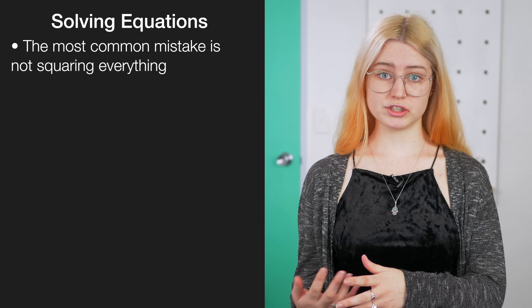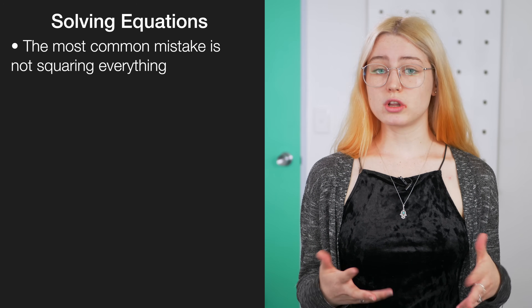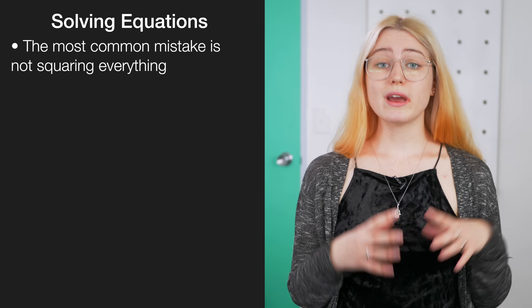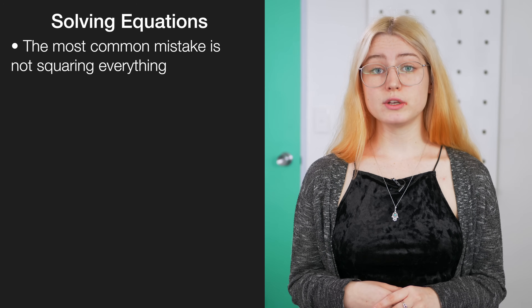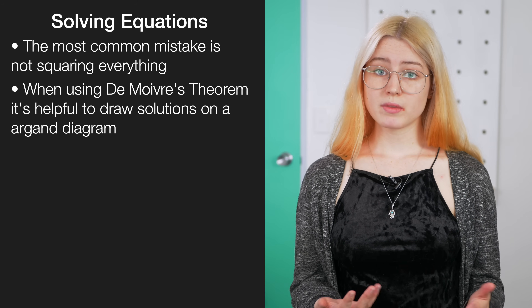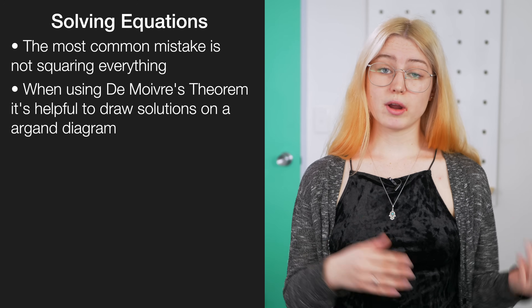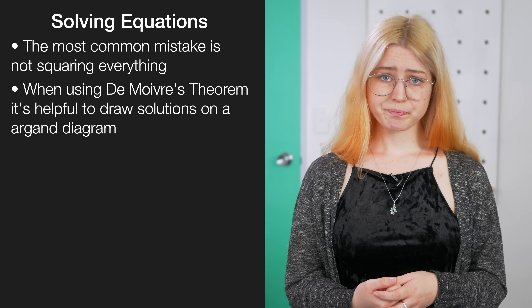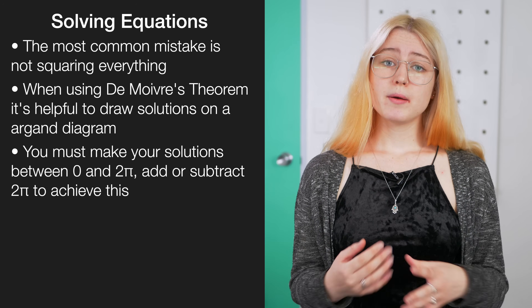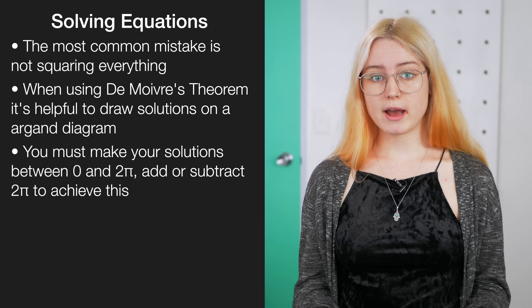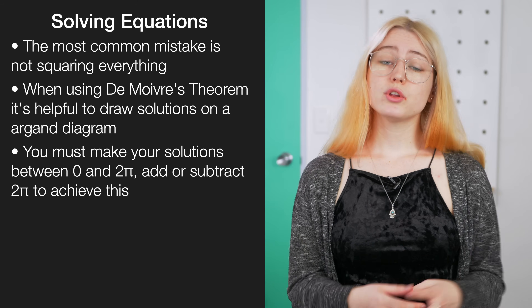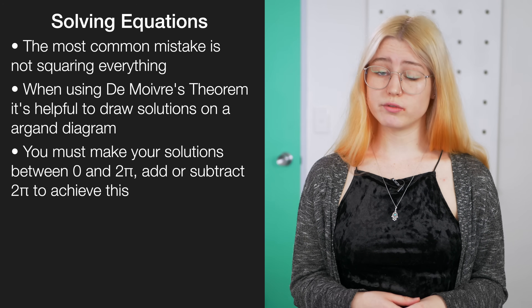Another key part of the standard is solving equations. A really common error is not squaring the entire equation — remember from your fundamental algebra knowledge that whatever you do, you must do to the entire side. For solutions to higher order polynomials, you'll use an extension of De Moivre's theorem. It can be helpful to graph this on an Argand diagram beforehand. Often your answers won't be between 0 and 2π, so you have to convert into this format by adding or subtracting 2π, and because the function works in a loop your answers will be exactly the same.